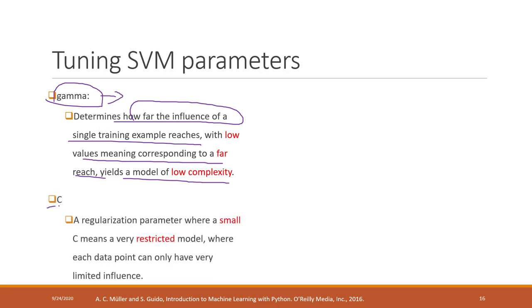The second parameter is called the C parameter, which we introduced in the previous slide when discussing logistic regression. It is a regularization parameter where a small C indicates high penalty and a more restricted, less complicated model.